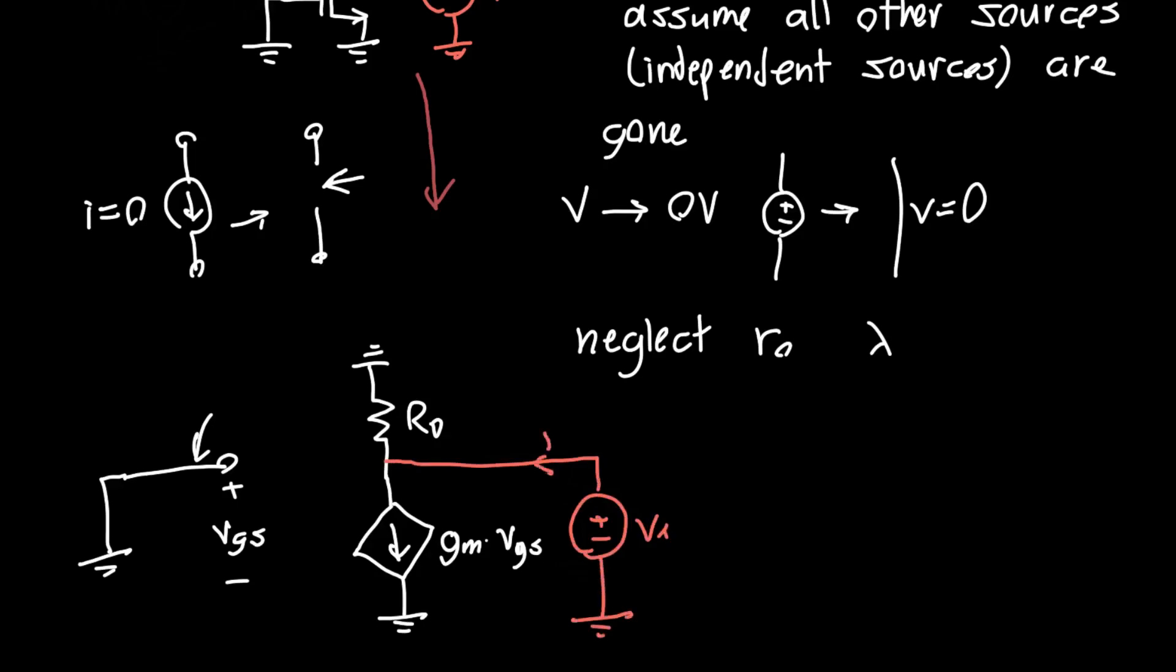The only thing we're missing is our test voltage source V_x. We want to measure the test current flowing out, I_x. How does this dependent current source affect everything? What is V_GS? V_GS is V_G or zero volts because it's ground, minus V_S which is also zero volts. So V_GS is actually zero, so g_m times zero.